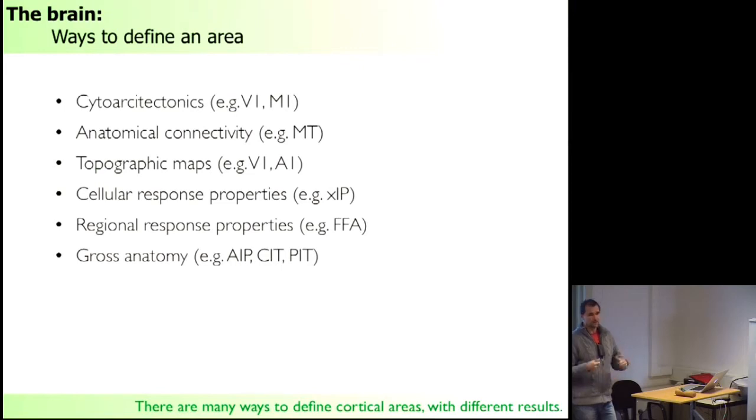And way back, Brodmann has tessellated the human brain, actually the left brain of one individual, into 52 different cortical areas based on the cytoarchitectonics. For example, he's marked in primary visual cortex and primary motor cortex.